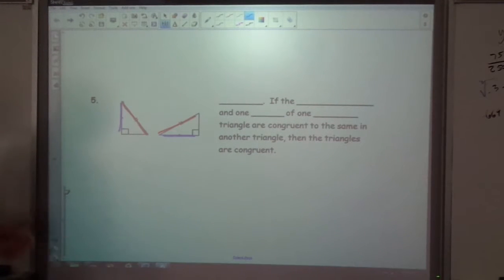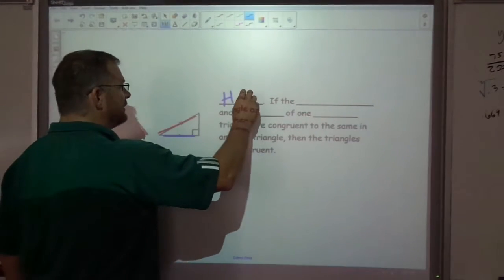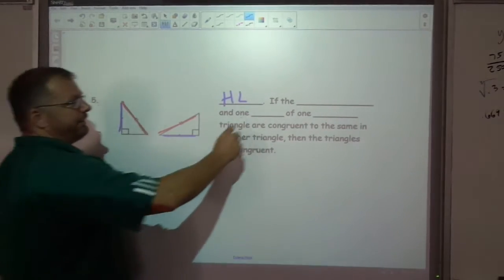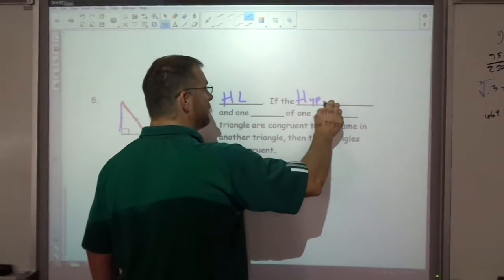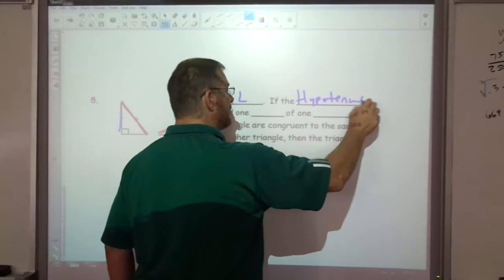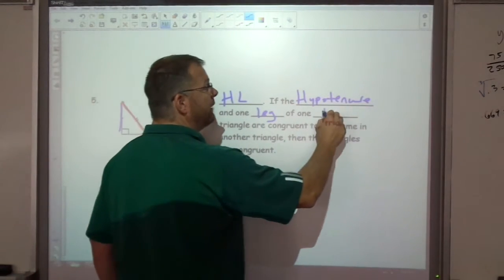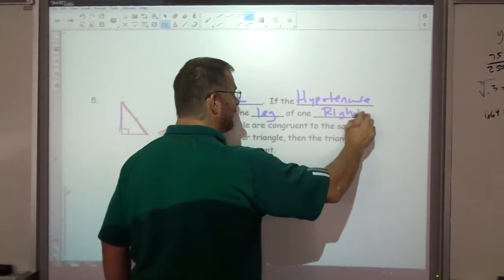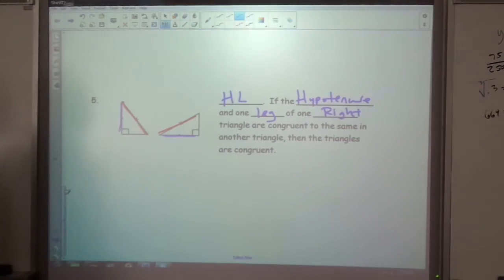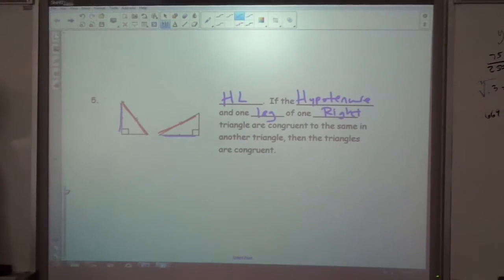But if you ever see a right triangle, hypotenuse leg is enough. This is called hypotenuse leg, and it says if the hypotenuse and one leg of one right triangle is congruent, then the triangles are congruent. That's enough.